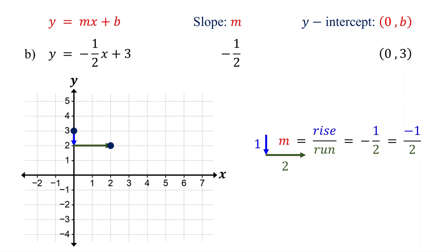From the second point, move down 1 unit, then to the right 2 units, and plot the third point. From the third point, move down 1 unit, then to the right 2 units, and plot a point. Finally, draw a line that passes through the points. That's your graph for this example.